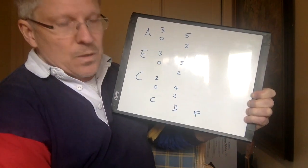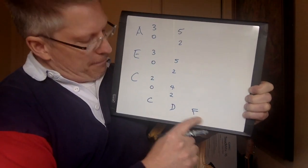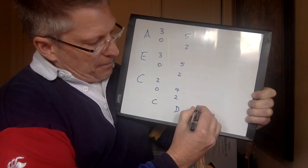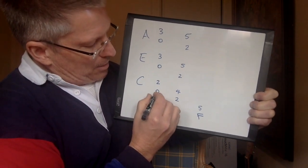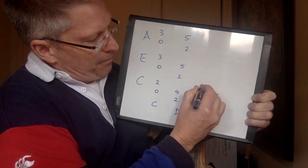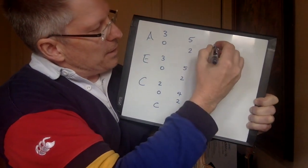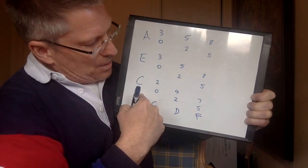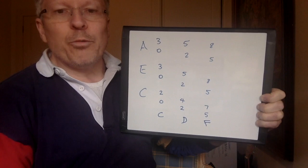Let's take F. F is the fifth fret — 5 frets away from C — so we add 5 to everything. 5 onto 0 is 5; 5 onto 2 is 7 on the C string; add 5 on the E string; add 5 on the A string, getting to fret 8. That's our F pentatonic scale, starting on the fifth fret of the C string, then the fifth fret of the E string, then the fifth fret of the A string. This is how you move pentatonic scales.